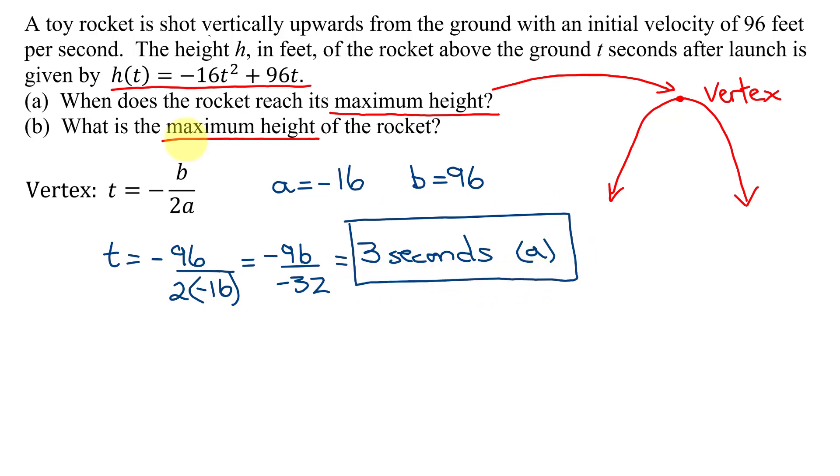Now we need to find the maximum height of the rocket. So all we have to do is plug 3 into our function. So to find h of 3, I get negative 16 times t squared. So that's 3 squared plus 96 times t, which is 3.